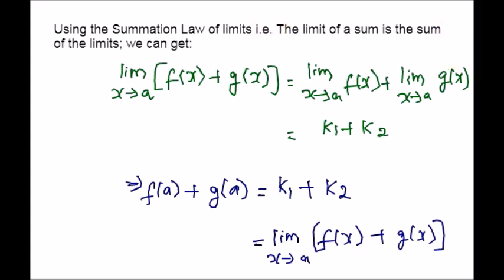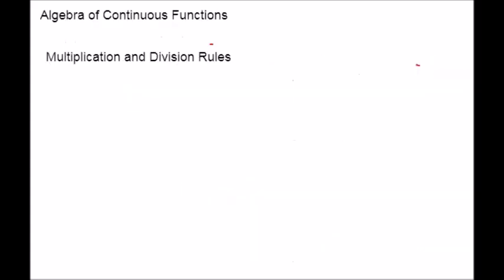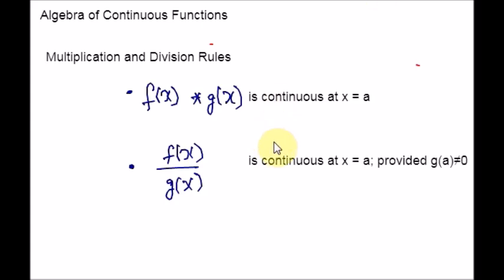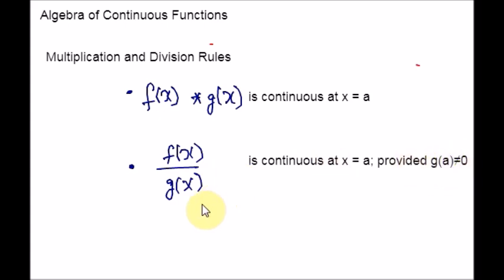Now we can move on to the other two rules: multiplication and division. Here are the third and fourth rules. f(x) times g(x) is continuous at x equal to a. And f(x) over g(x) is continuous at x equal to a, provided g(a) is not equal to zero. If g(a) equals zero, the denominator would become zero and the entire expression would become undefined — that is the reason we exclude this point. Now let us show the proof using the product law of limits: the limit of a product is the product of the limits.